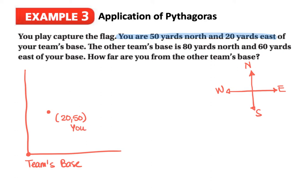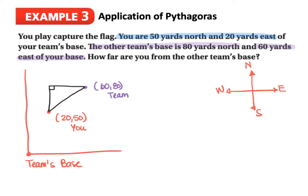The other team's base is 80 yards north and 60 yards east of your base — they are more north and more east than you. That plots as coordinate 60, 80, since north is our y-axis. From here, I'll draw a right-angle triangle between your position and the other team's base, sketching it out and marking that right angle in between.